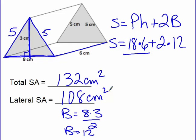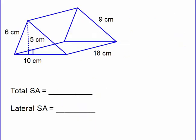So what you see is all we're doing is plugging into a formula. A formula is just a set of directions that you have to follow. So what I'd like for you to do is: pause the video and find for me the total and lateral surface area of this triangular prism.